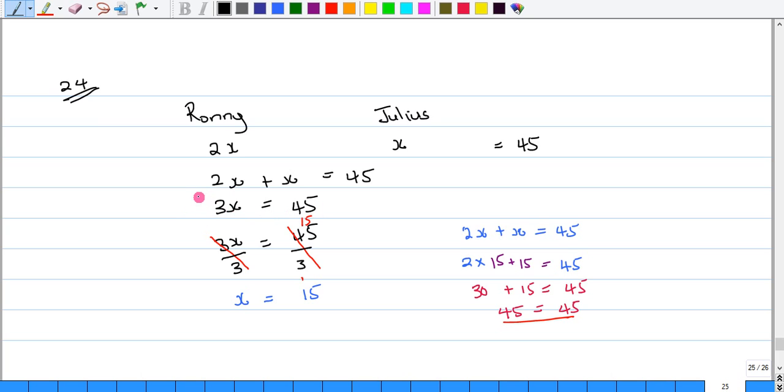To get x, I'll have to divide the left-hand side of the equation by 3 and the right-hand side of the equation by 3. So 3 will cancel 3, leaving me with x. And 3 into 45 goes 15 times. x is equal to 15.